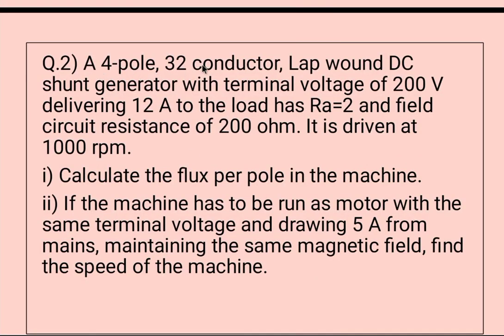A four pole, 32 conductor lap wound DC shunt generator with terminal voltage of 200 volt delivering 12 ampere to the load has armature resistance equal to 2 ohm and field circuit resistance of 200 ohm. It is driven at 1000 rpm.